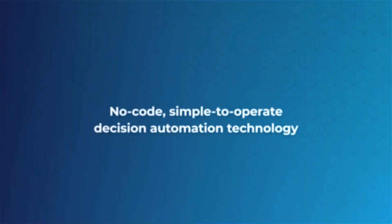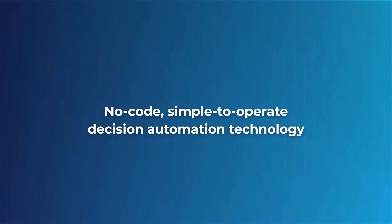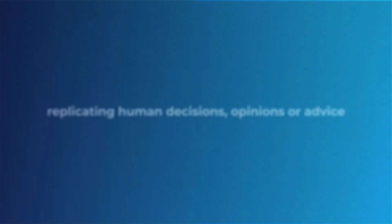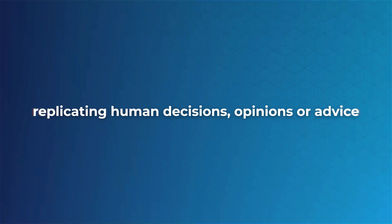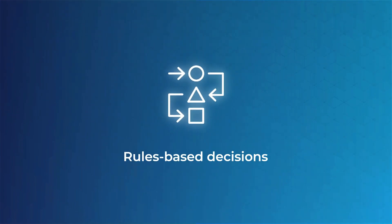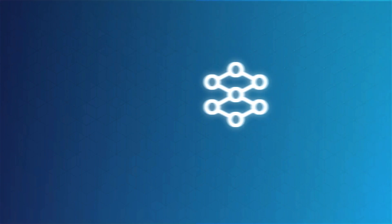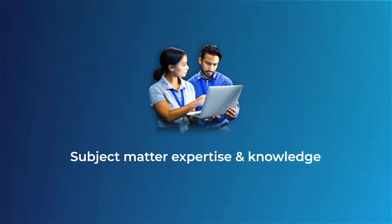Tacit Object Modeler, or TOM, is a no-code, simple-to-operate decision automation technology replicating human decisions, opinions, or advice. TOM is used to replicate simple, rules-based decisions all the way through to complex, highly cognitive decisions requiring subject matter expertise and knowledge.